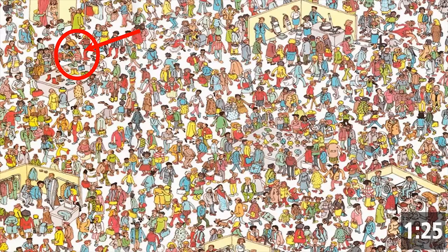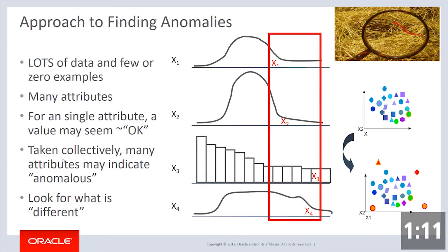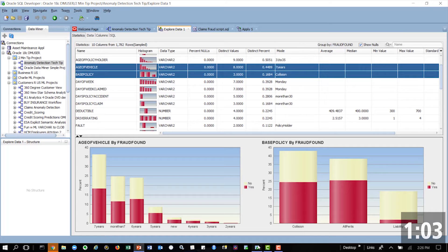Now we're going to see if we can show you how we do that in a little bit more technical detail. We have lots of data and very few examples of fraud or anomaly detection. So we're going to look at each and every variable and see anything that stands out as being a little bit different. Each one of these things may be unto itself sort of normal, but taken in combination, they're a little bit different. So let's go off and see how we can do that in the product.